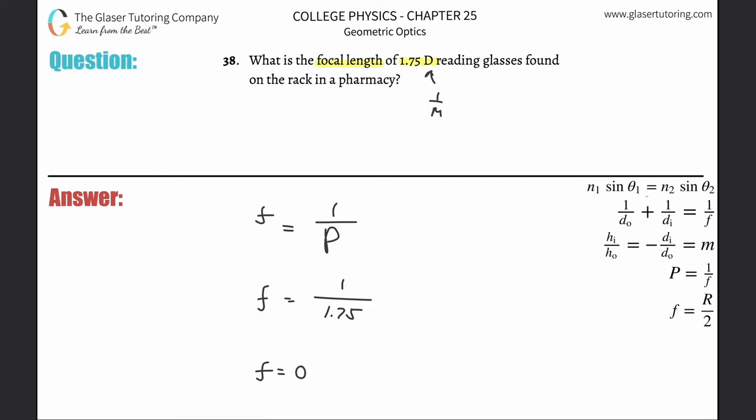And this now turns out to be 0.571 meters, because a diopter is 1 over meter. Guys, thank you so very much. And that does it for this one. See you in the next one.